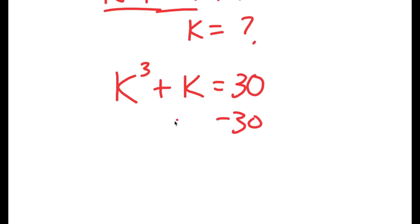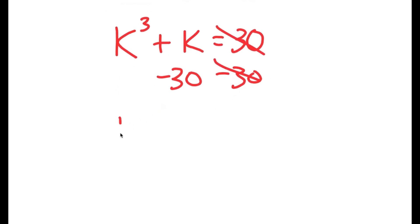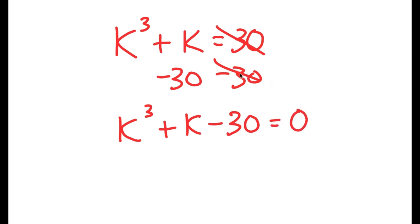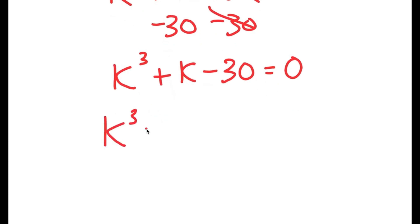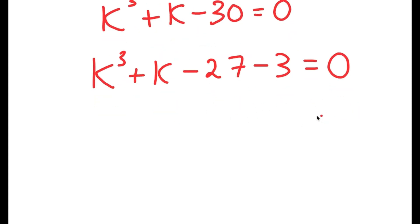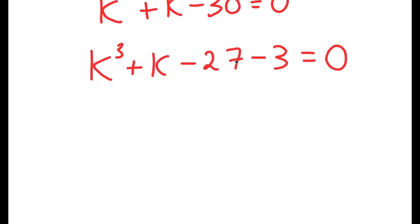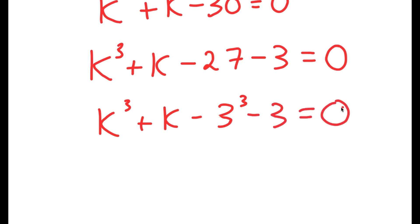Now I'm going to subtract 30 on both sides, so I get k to the power of 3 plus k minus 30 is equal to 0. I'm going to rewrite this as k to the power of 3 plus k minus 27 minus 3 is equal to 0. And 27 is the same thing as 3 to the power of 3, so I get k to the power of 3 plus k minus 3 to the power of 3 minus 3 is equal to 0.